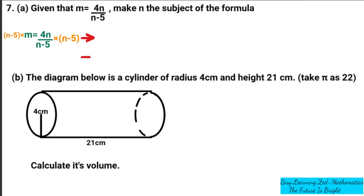We multiply m by every term in the bracket. So m multiplied by n gives us mn, and m multiplied by negative 5 gives us negative 5m. On the right side, we cancel the n minus 5 in the denominator with the n minus 5 on top, and we remain with 4n.